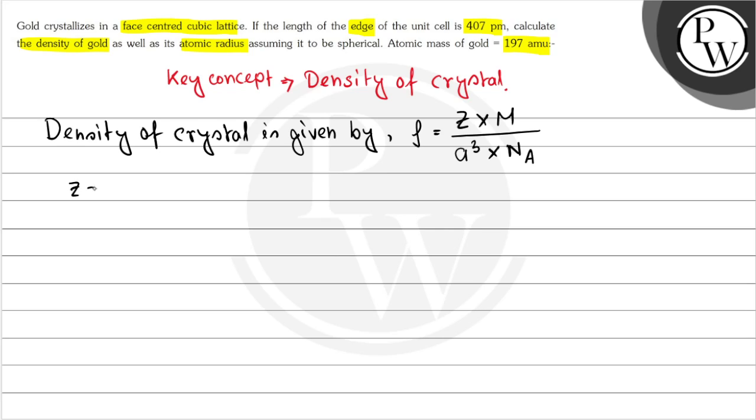Here, what is z? z is the number of atoms per unit cell.